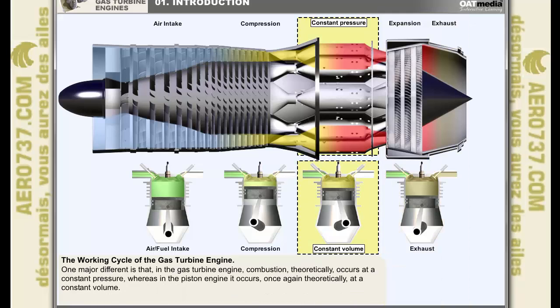One major difference, however, exists in that in the gas turbine engine, combustion, theoretically, occurs at a constant pressure, whereas in the piston engine it occurs, once again theoretically, at a constant volume.